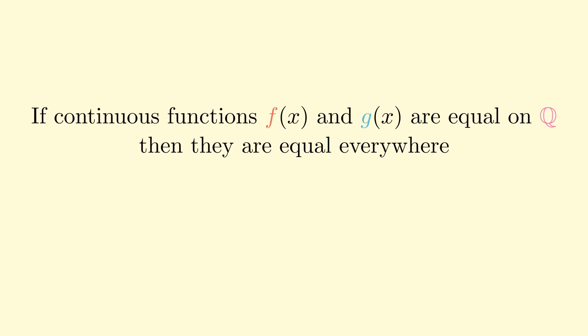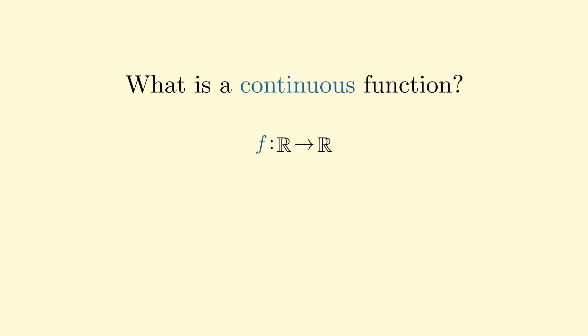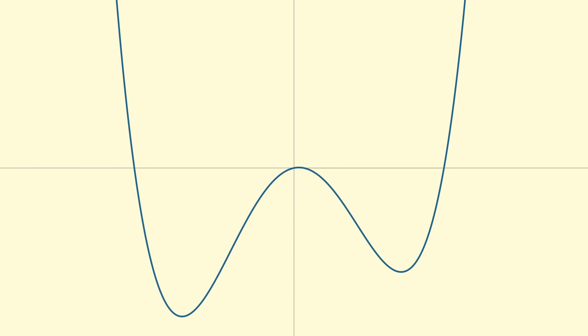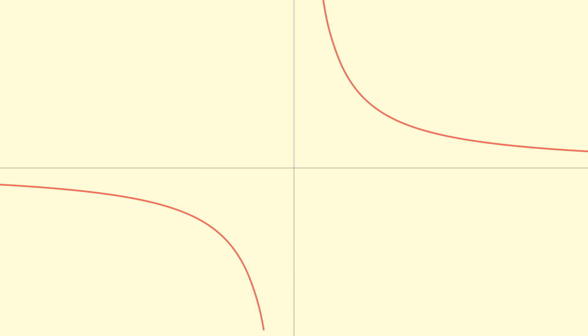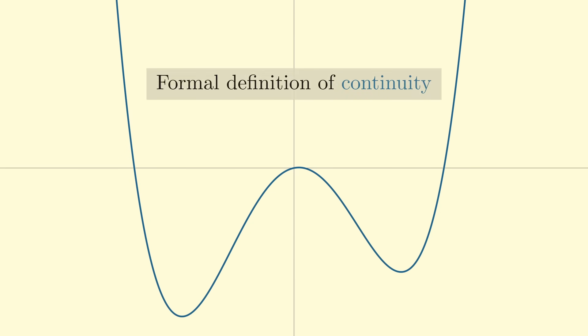Before we embark on a proof, we need a formal definition of what a continuous function is. Our functions will be from the real numbers to the real numbers. Very informally, a continuous function is any function whose graph you can draw without picking up your pencil. This eliminates functions that have a jump, where there's a sudden change in value. It also eliminates functions with an asymptote, and rules out any function with strange oscillatory behavior. We'll use the intuition from these examples to build a formal definition of continuity.